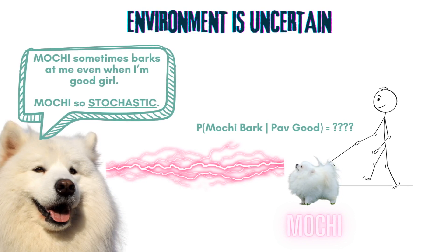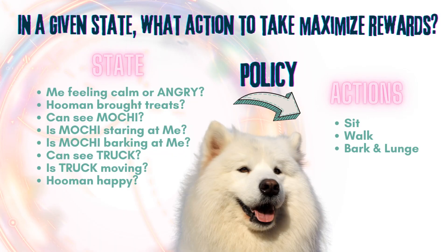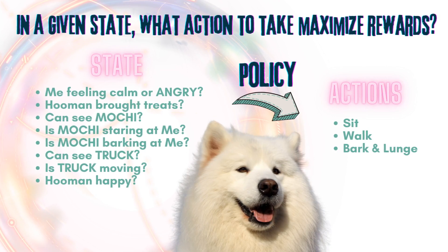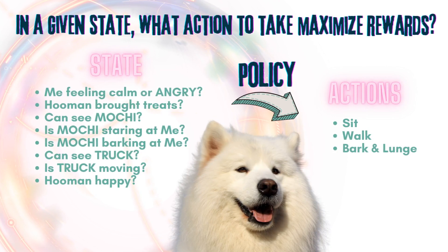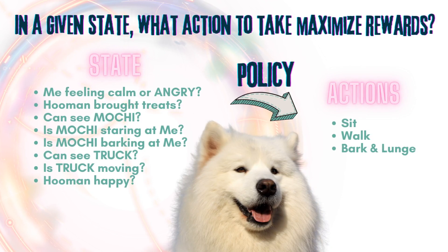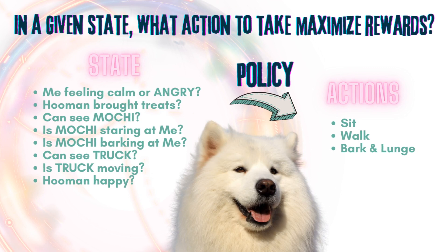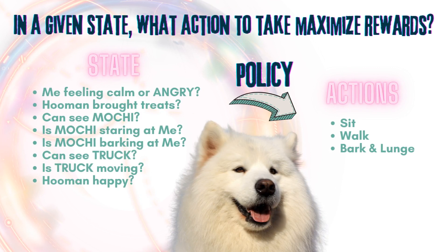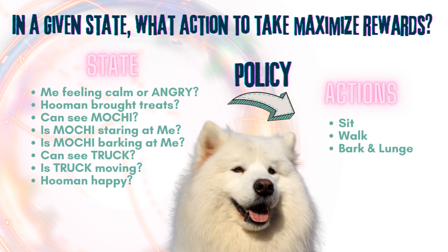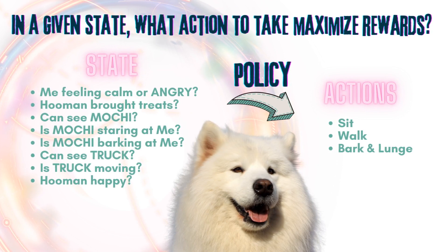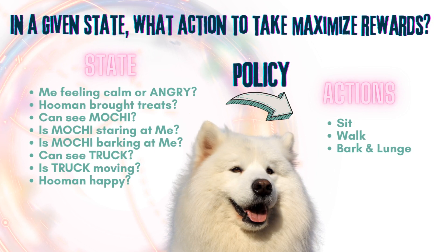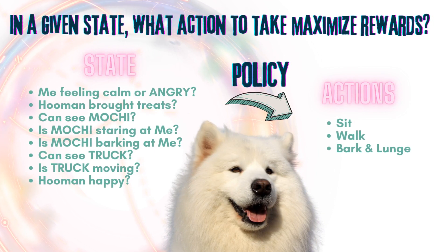Here we will introduce an important concept in reinforcement learning: the idea of a policy. A policy is just how Pav's doggy brain maps states to actions. If there were no treats, Pav's natural policy would be to bark and lunge every time the state involves Mochi or a moving truck. However, now that Mr. Stick has been giving rewards to Pav when she chooses to sit during these states to reinforce desired behaviour, Pavlova has been updating her policy accordingly, so as to maximise the number of treats she gets on the walk.